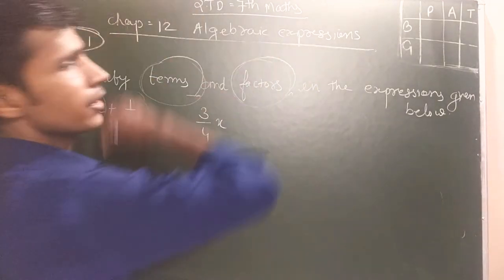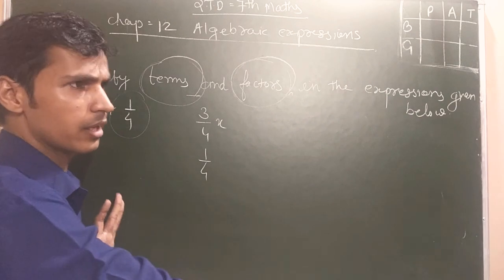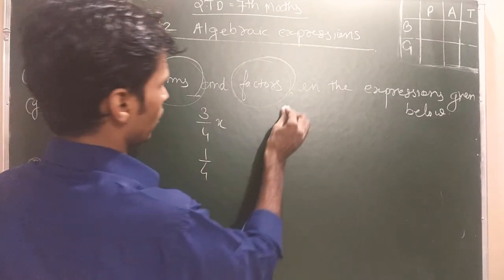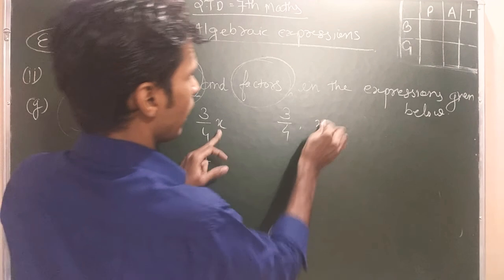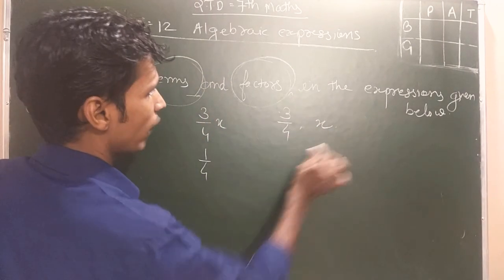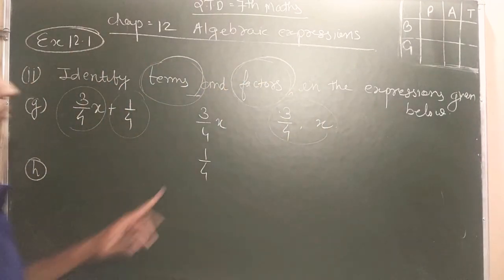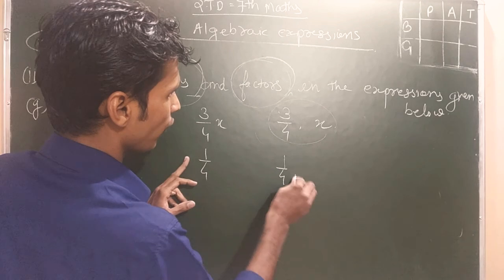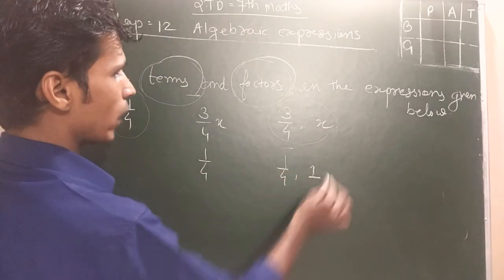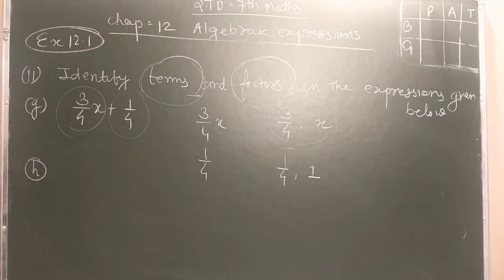I am a factor, defined current. As a factor: 3 by 4 and X, these two are the factors of this term. Now, 1 by 4 and 1, these two are the factors of this number.